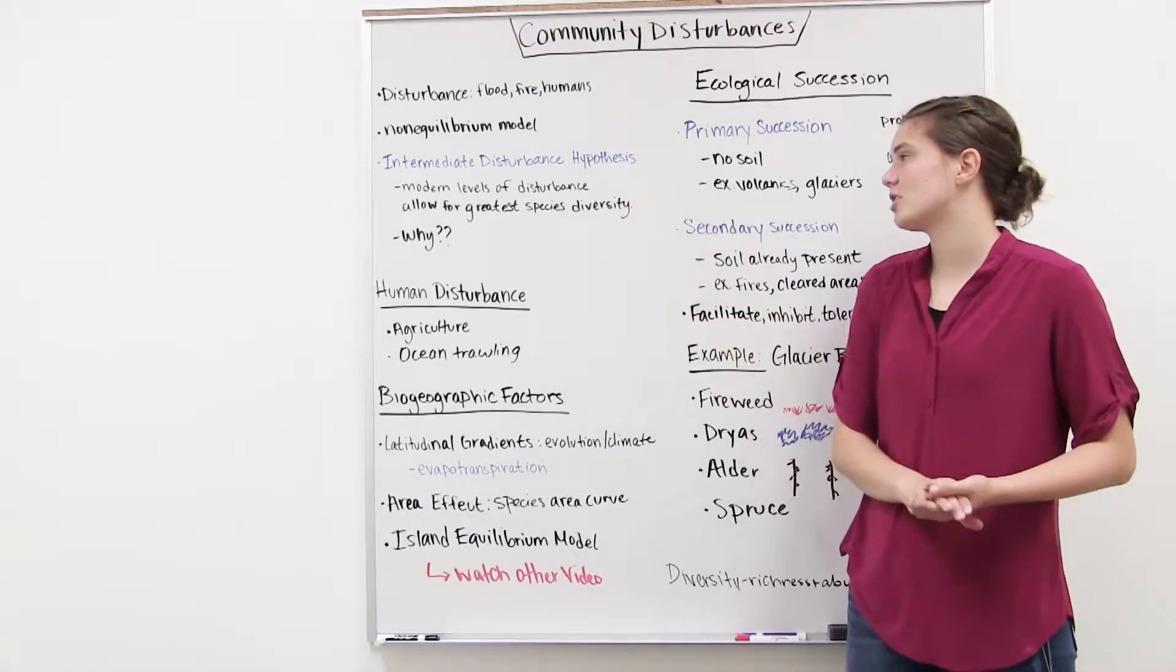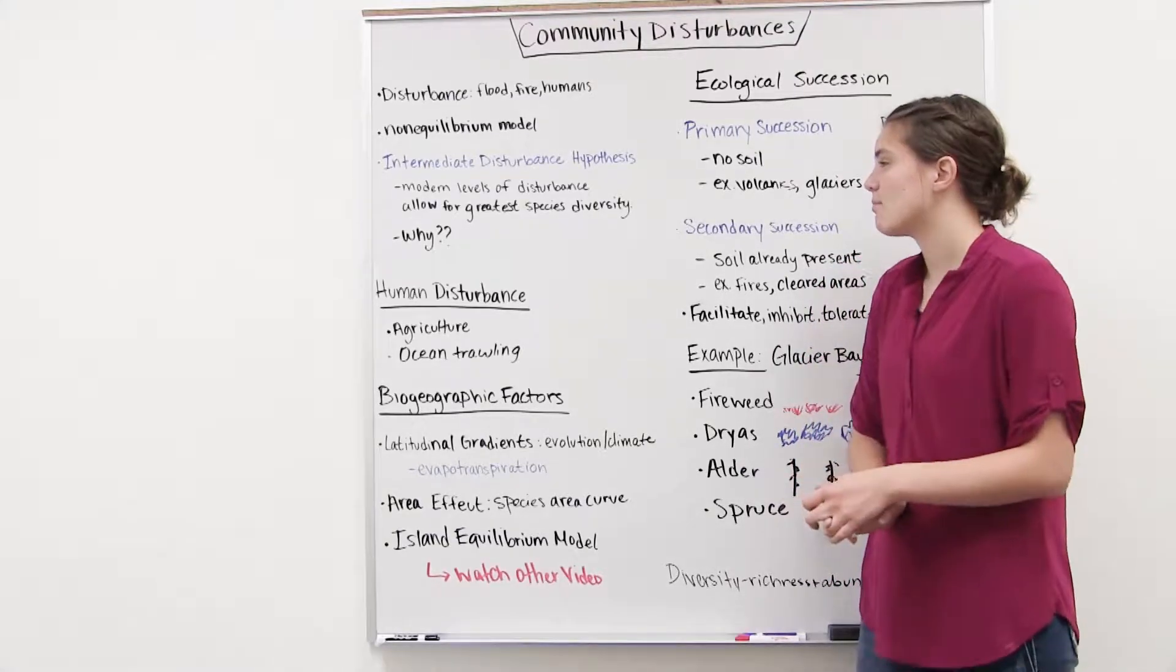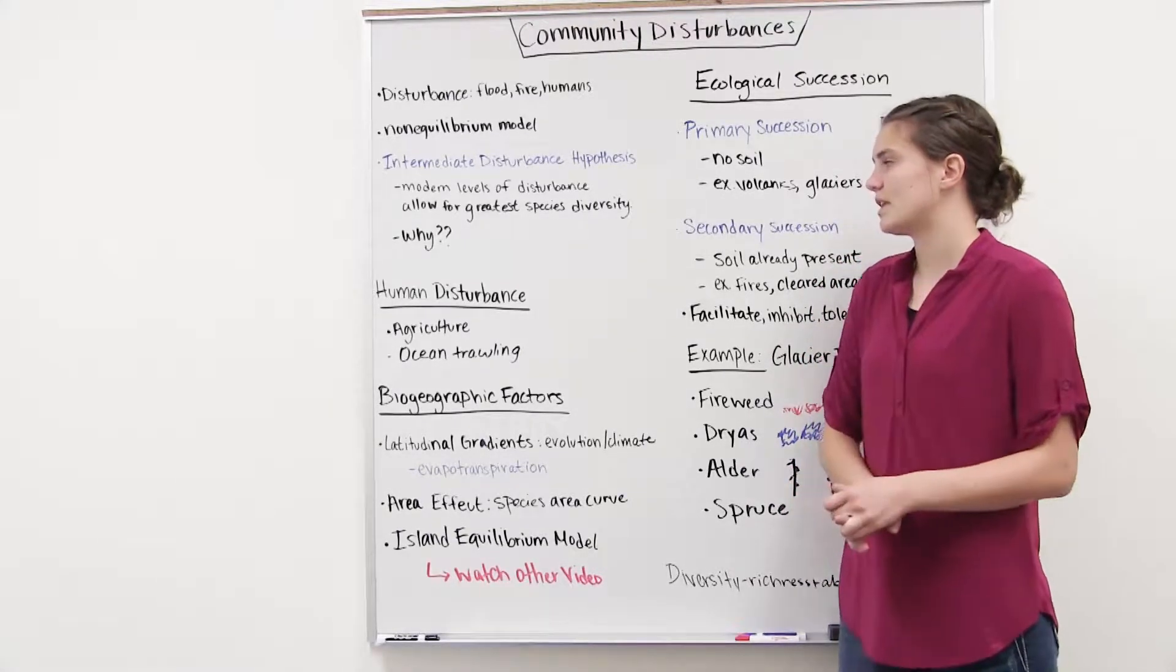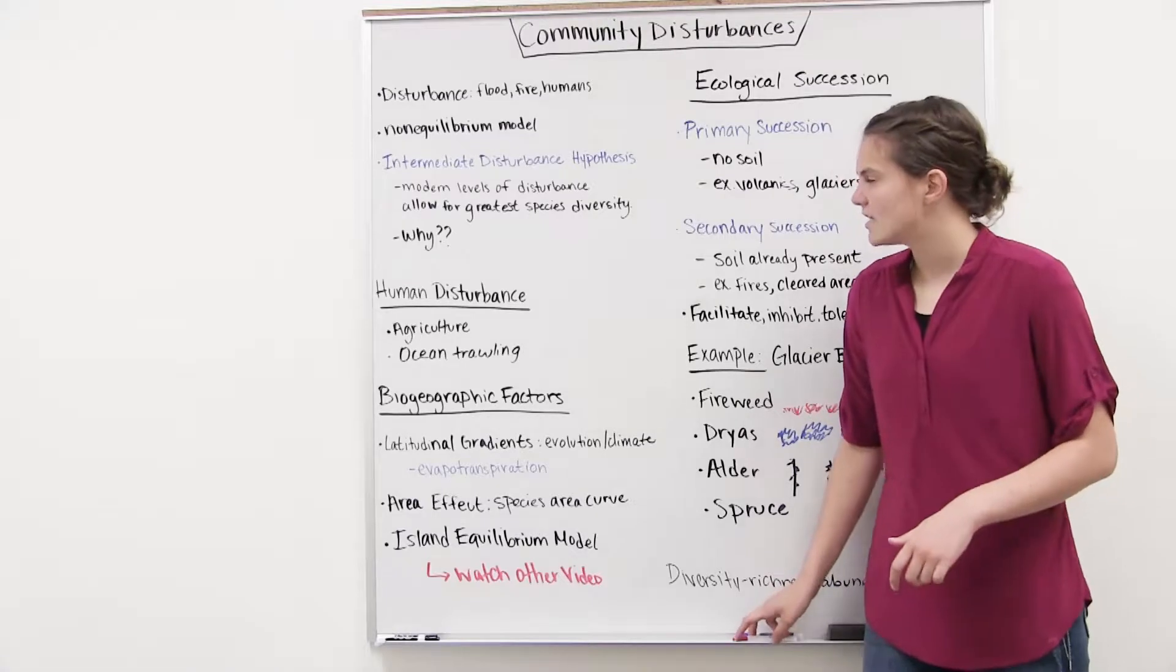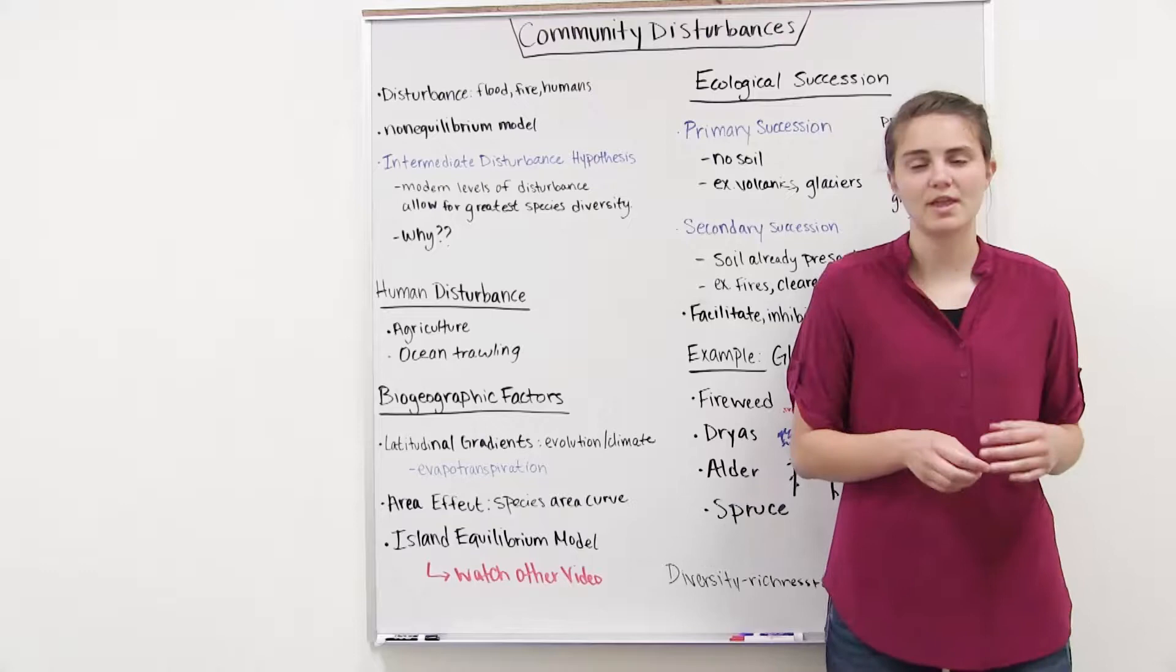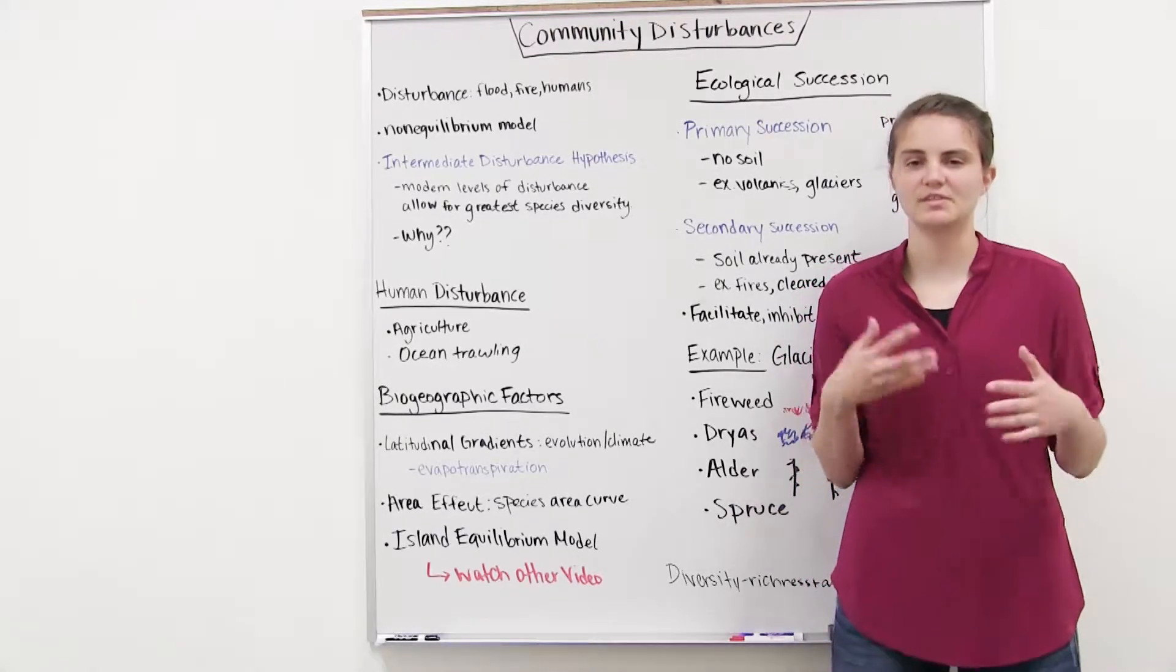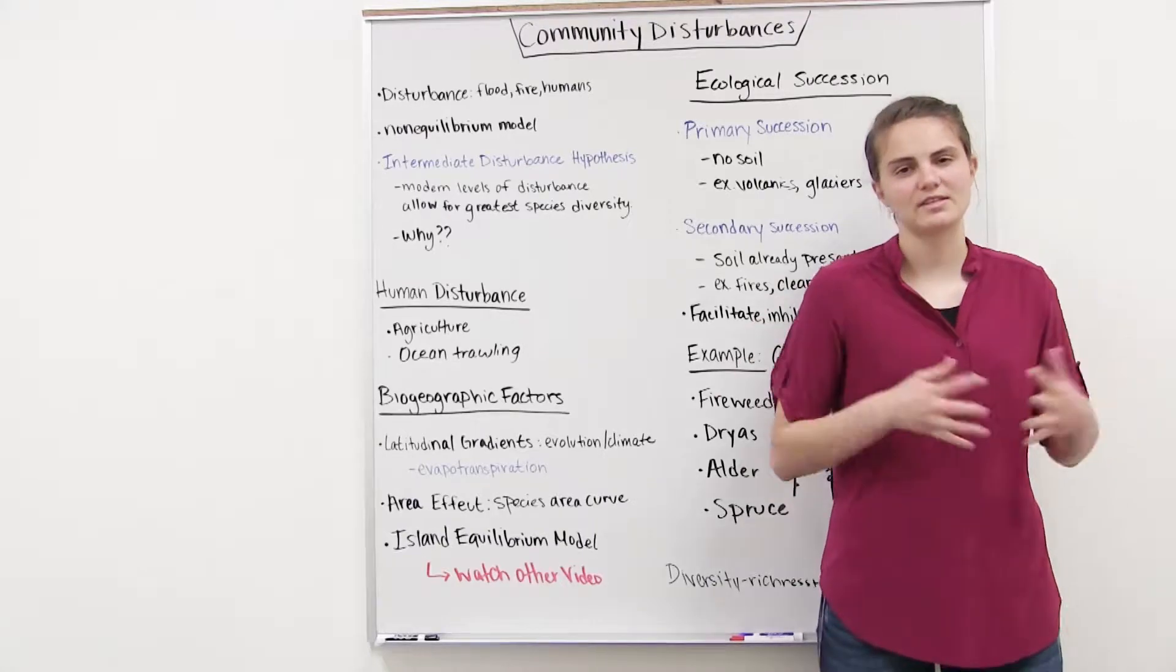So that brings us to this idea of the intermediate disturbance hypothesis. And this hypothesis says that moderate levels of disturbance allow for the greatest species diversity. And so why is that? Why is it that when we have moderate levels of disturbance, so we have moderate levels of intensity, moderate levels of frequency, so we have disturbances now and again, why is that allowing the greatest species diversity?